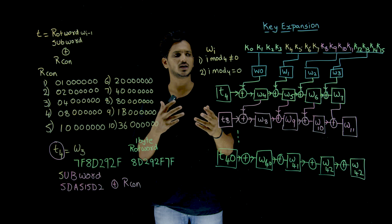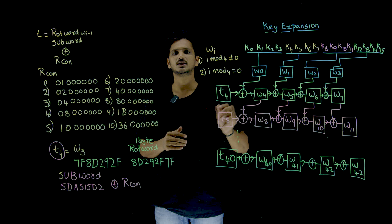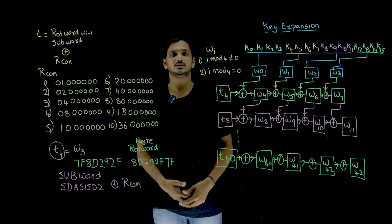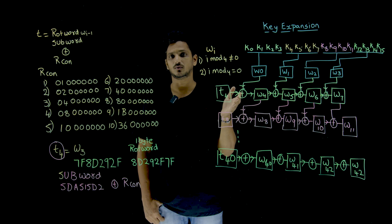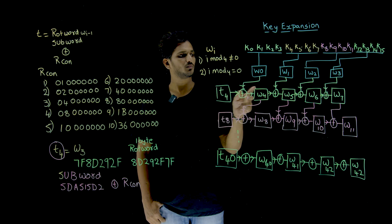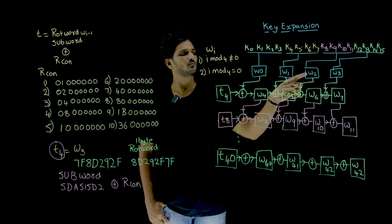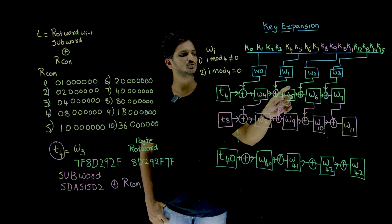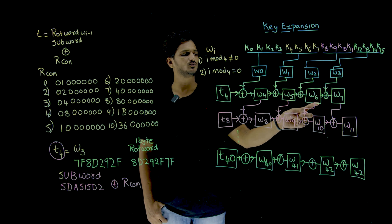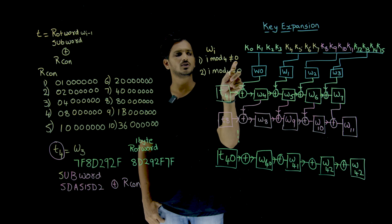In simple words: the previous word and the top word are XOR'd, and whatever output you get is taken as the new word. Similarly, for W6: 6 mod 4 is not equal to 0. The previous word is W5, and the top word is W2. These two words are XOR'd and that gives you W6. So if I mod 4 is not equal to 0, the new word equals W_{I-1} XOR W_{I-4}.